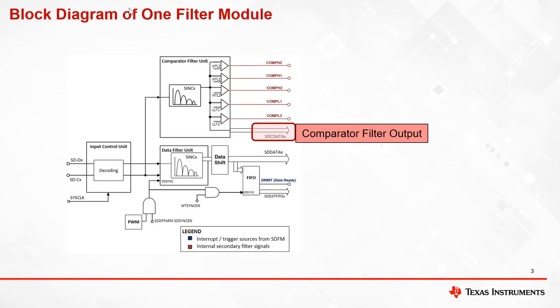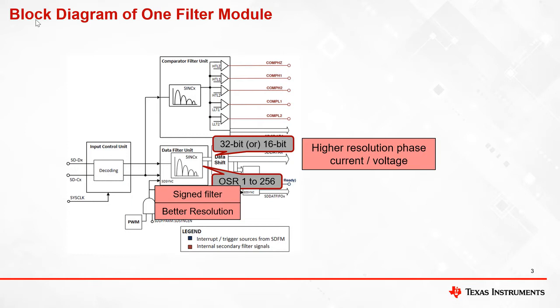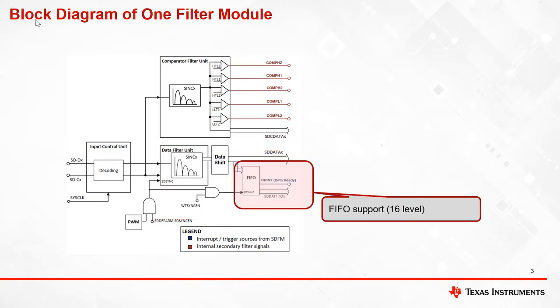The data filter provides high-resolution digital output as it supports OSR settings from 1 to 256. The output of the data filter is a signed integer which can be represented in 32-bit or 16-bit format. This high-resolution digital output is used in the control loop. The FIFO provides the ability to store filter results to reduce the frequency of interrupts from the data filter.